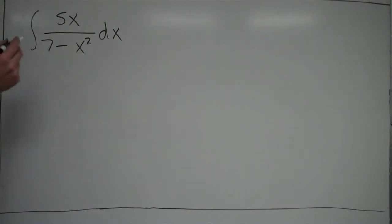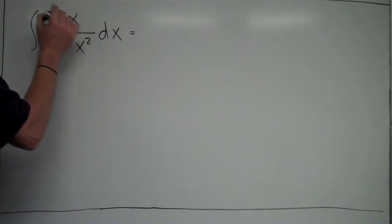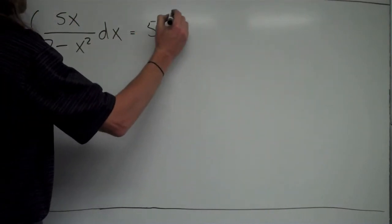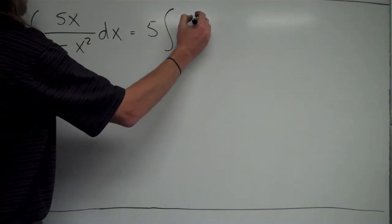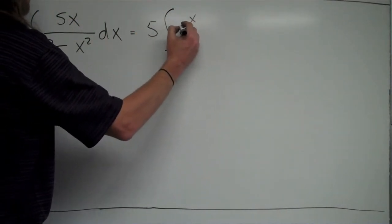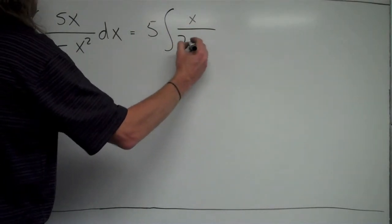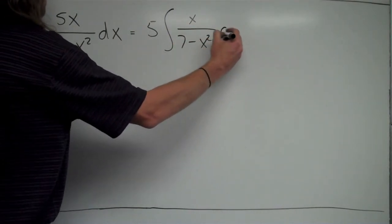First off, that 5 is just getting in the way, so I'm going to bring that 5 outside of the integral. On the top right now I have x over 7 minus x squared dx.